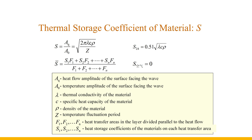S₂₄ is the heat storage coefficient with a fluctuation period of 24 hours. The average heat storage coefficient is used when a layer is composed of several materials, where F1, F2, and Fn are the heat transfer areas in the layer divided parallel to the heat flow, and S1, S2, and Sn are the heat storage coefficients of the materials on each heat transfer area. The heat storage coefficient of air is zero.